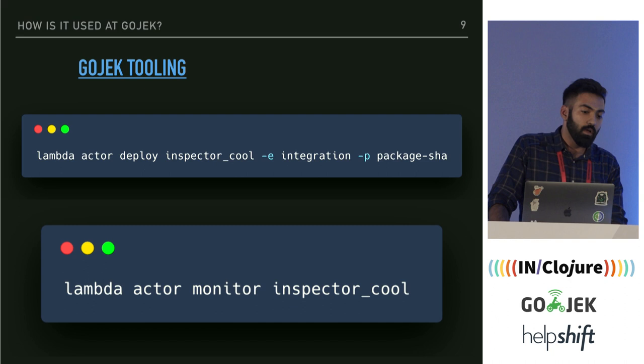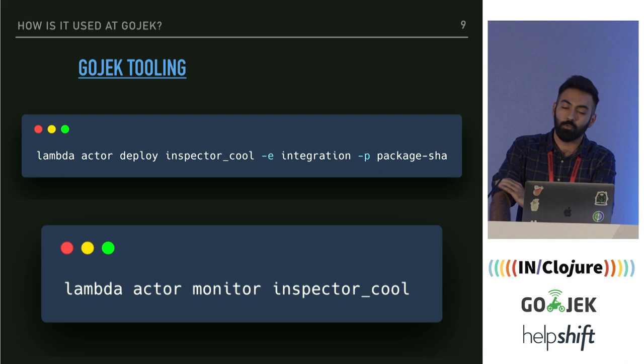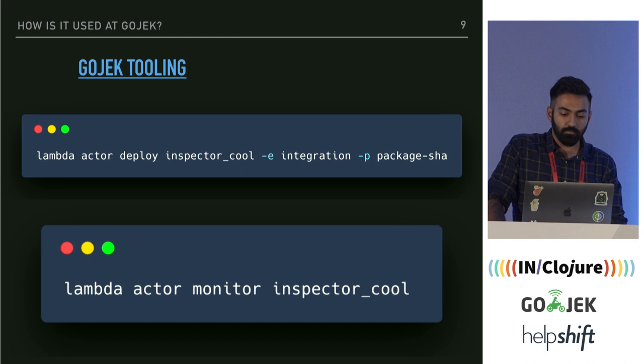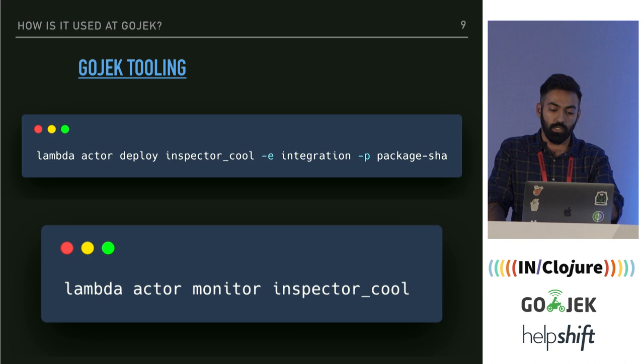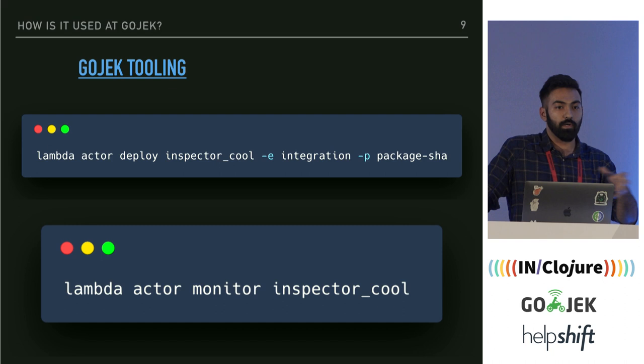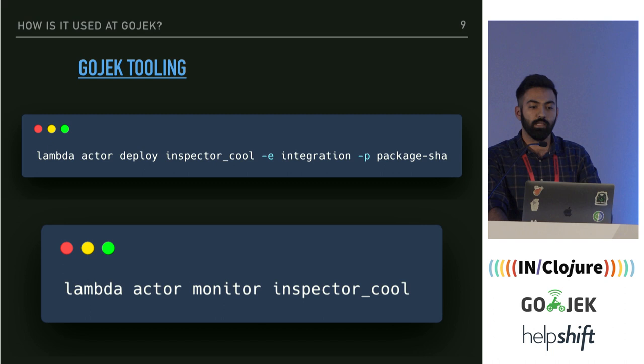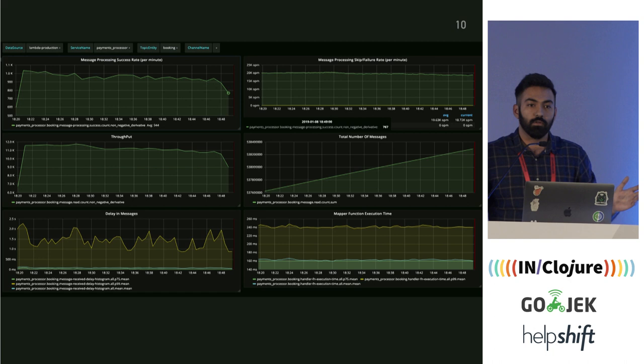We have our CI set up to package applications. Using the Lambda framework, you just say 'lambda actor deploy' — specifying the environment and package you want to deploy — and it will deploy in all clusters. For every country we have separate clusters, so with this one command you can deploy the same package to all countries with the correct config.